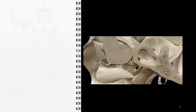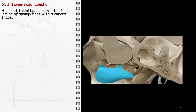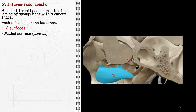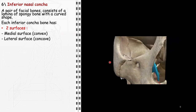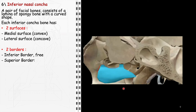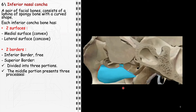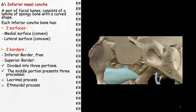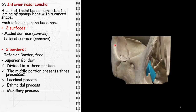The inferior nasal concha, also known as the inferior turbinate, consists of a pair of facial bones distinguished by their uniquely curved laminar structure composed of spongy bone. Each inferior concha bone features two distinct surfaces: the medial surface, a convex surface facing the nasal septum, and the lateral surface, a concave surface facing the outer wall of the nasal cavity. The inferior border is free and extends into the nasal cavity. The superior border, more complex, is divided into three portions. The middle portion is particularly notable for its three processes: the lacrimal process, articulating with the lacrimal bone; the ethmoidal process, connecting to the ethmoid bone and playing a role in the structural integrity of the ethmoidal labyrinth; and the maxillary process, which articulates with the maxilla, assisting in forming the lateral wall of the nasal cavity and contributing to the structure surrounding the maxillary sinus.